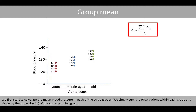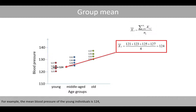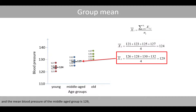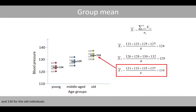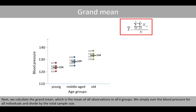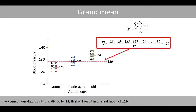We first start by calculating the mean blood pressure in each of the three groups. We simply sum the observations within each group and divide by the sample size of the corresponding group. For example, the mean blood pressure of the young individuals is 124, the mean blood pressure of the middle-aged group is 129, and 134 for the old individuals. Next, we calculate the grand mean, which is the mean of all observations in all K groups. We sum the blood pressure for all individuals and divide by the total sample size. If we sum all our data points and divide by 12, that will result in a grand mean of 129.